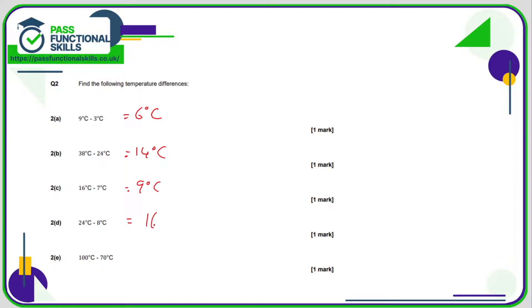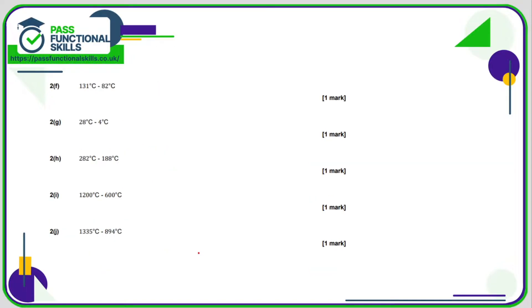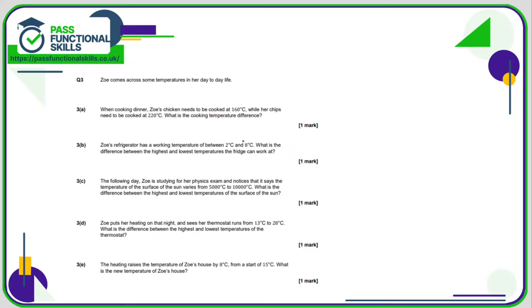131 minus 82 is 49 degrees. 28 minus 4 is 24 degrees. 282 minus 188 is 94 degrees difference. 1200 minus 600 is 600 degrees. 1335 minus 894 is 441 degrees. Question two shouldn't have caused any issues given that you can use a calculator. Now back to non-calculator questions.